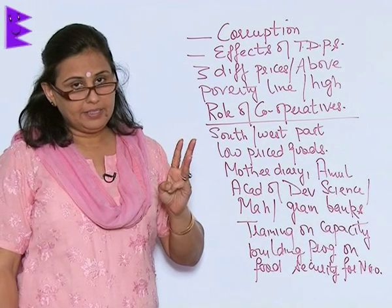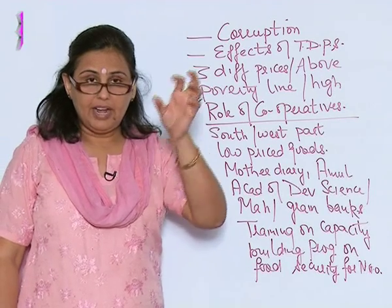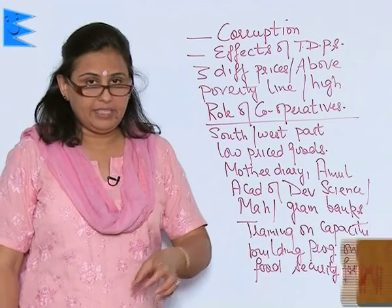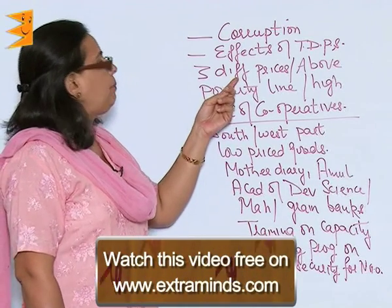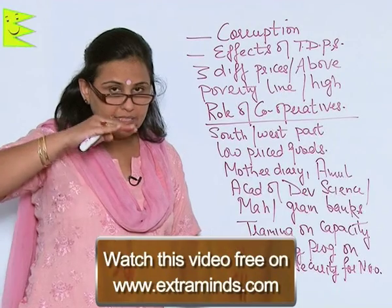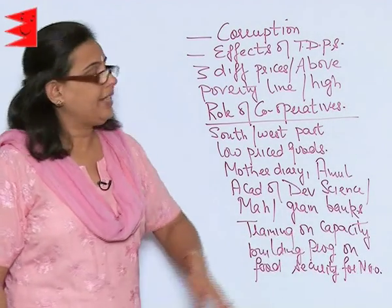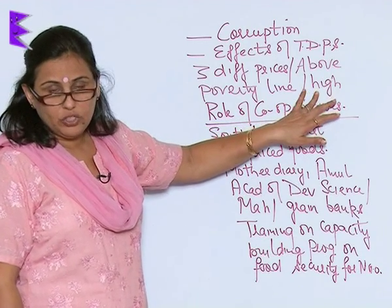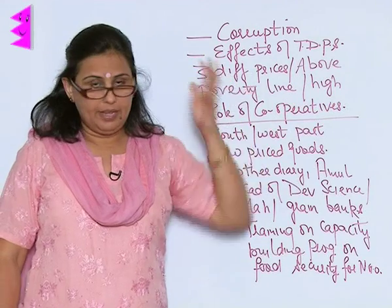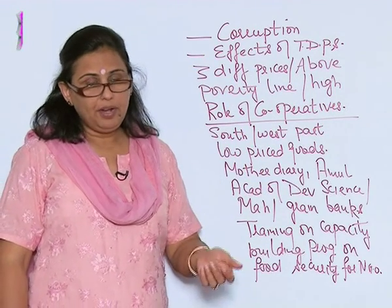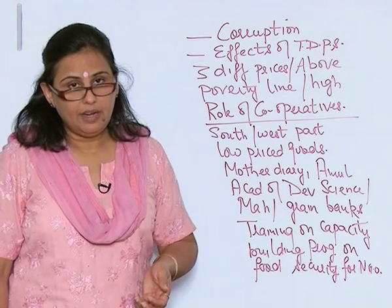Different strata of society are given ration cards on the basis of what category they belong to. The people who are placed above the poverty line get food grains at a high price, which is almost similar to that available in the market. Therefore, the public distribution system stands here as a failure.